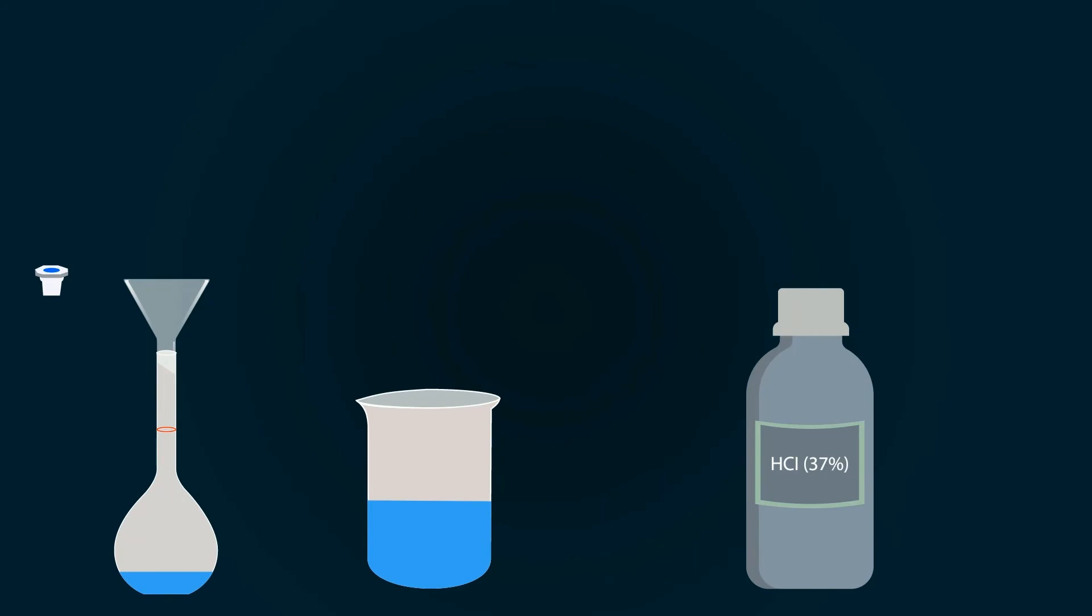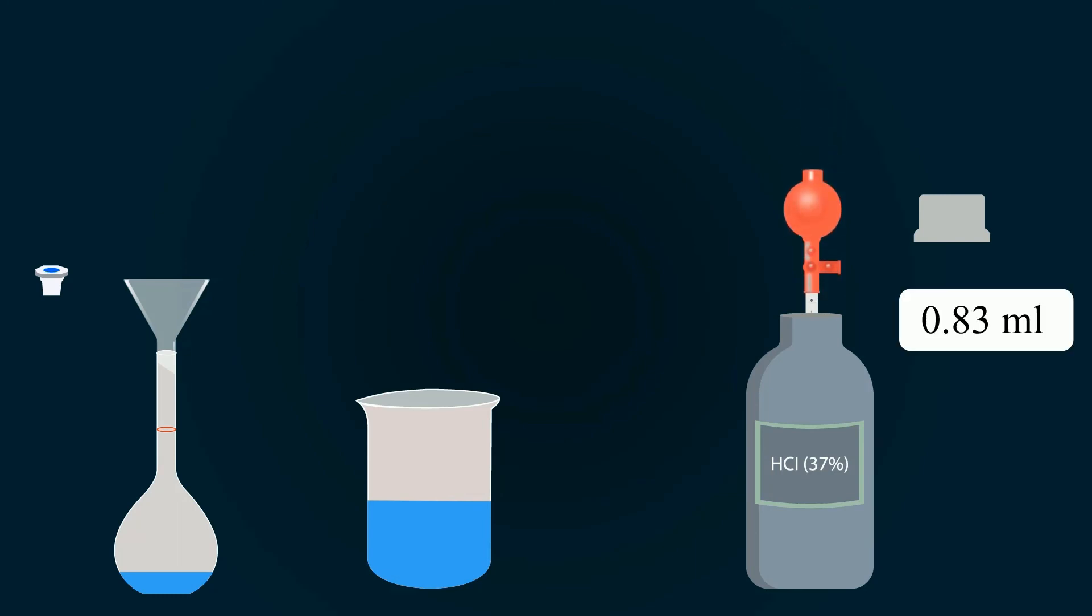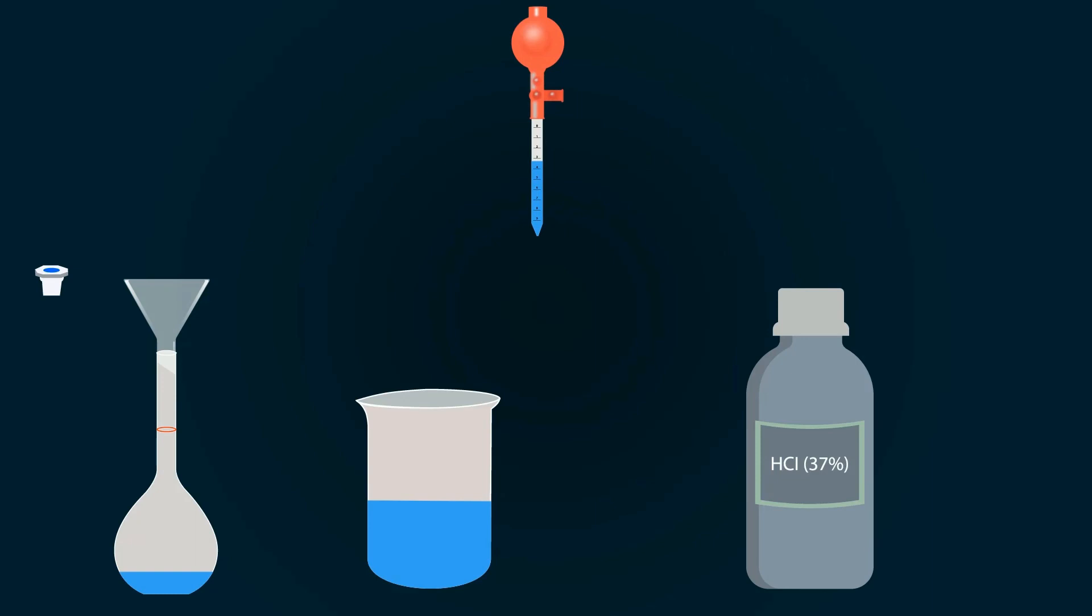Now take 37% HCl. Pipette out our required volume, which is 0.83 milliliters, and add this into the volumetric flask.